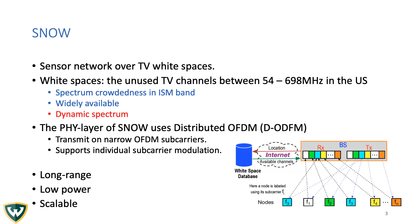So what is SNOW and why SNOW? SNOW is an LPWAN technology developed by our lab and it operates over TV white space spectrum. White spaces are the unused TV channels between 54 and 698 MHz in the U.S. It offers less crowded spectrum and it's widely available, especially in rural areas. However, white space spectrum is dynamic. So the geospatial variation of the white spaces raises challenges for both intra and inter-SNOW mobility, and we need to address this challenge.